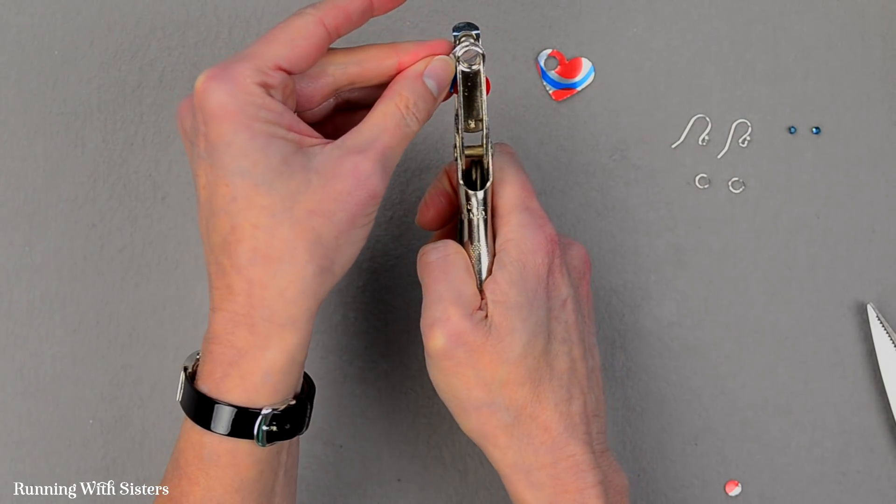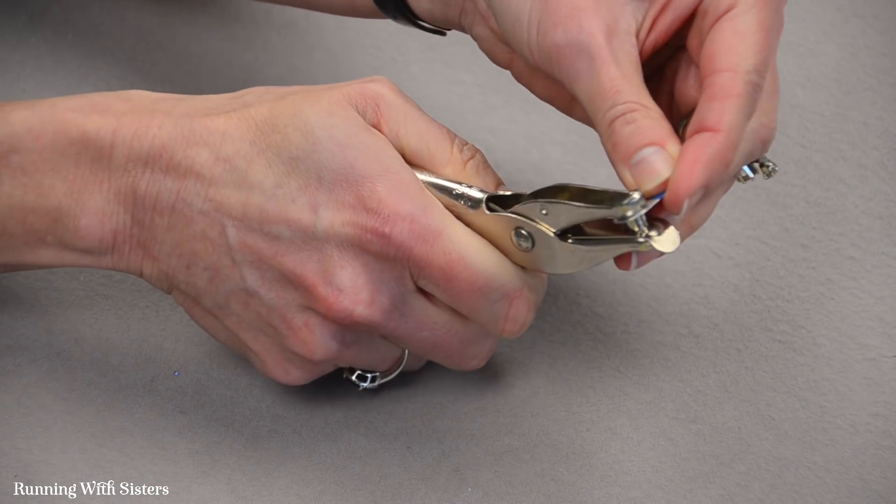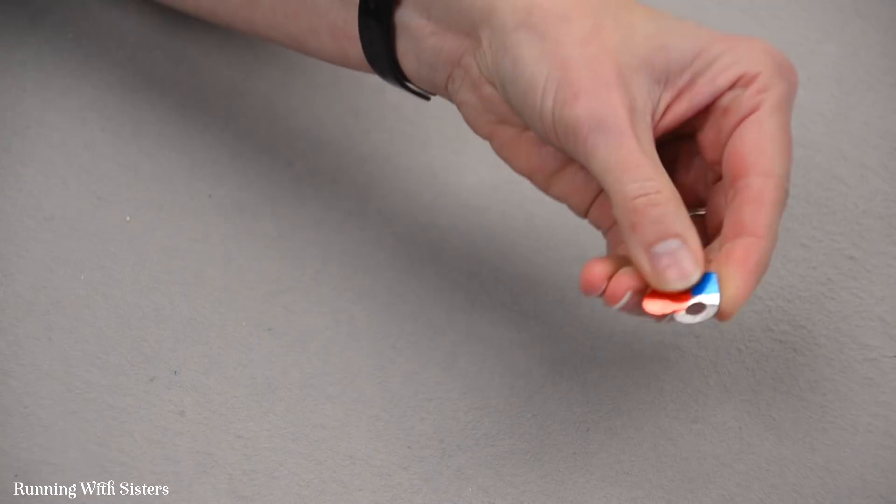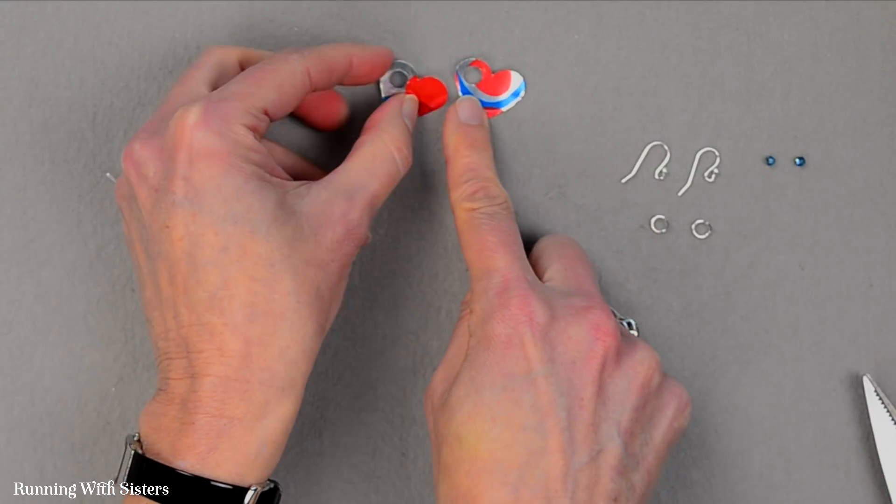And I'll do that again in the upper left of this one. And again I want to make sure I've got it in the right spot. Punch it again. And now all I have to do is turn these into earrings.